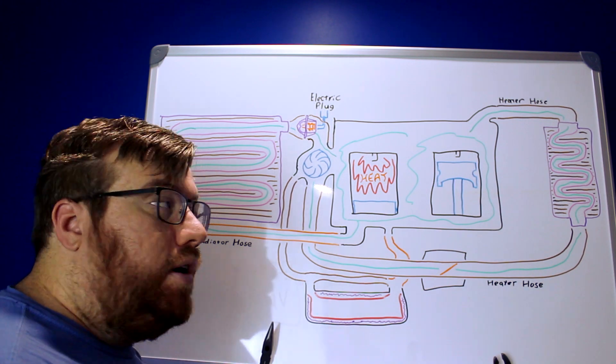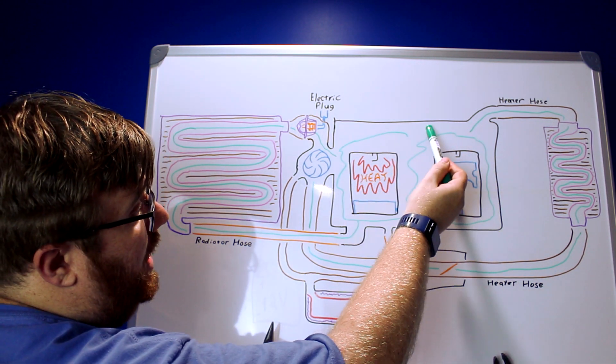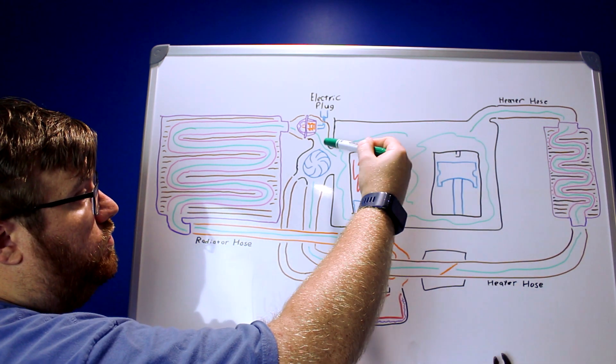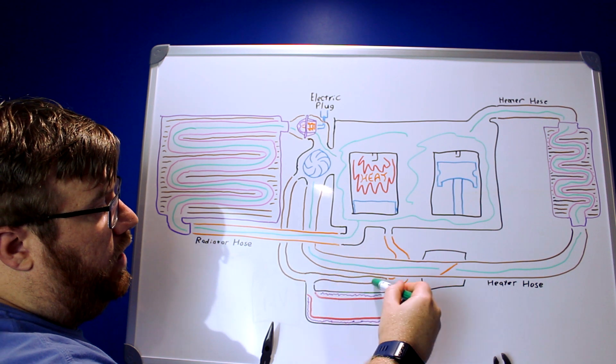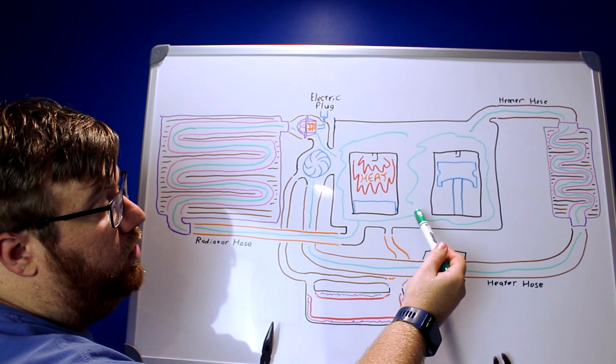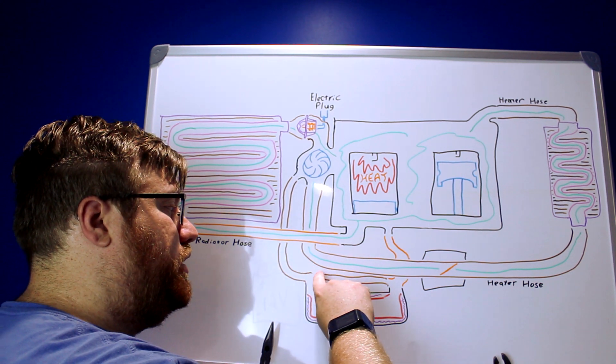So as I alluded to before, a lot of older engines will still have a bypass pipe where all this hot up top coolant will be drawn in by the water pump, be sent down, and can mix in with the bottom coolant, which is cooler, and that is a very common setup on some engines.